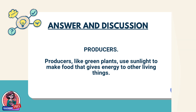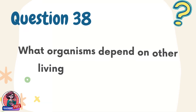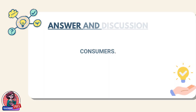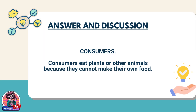Question 38. What organisms depend on other living things for food and energy? Answer: Consumers. Consumers eat plants or other animals because they cannot make their own food.